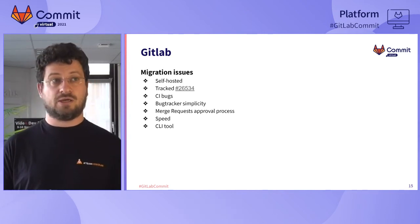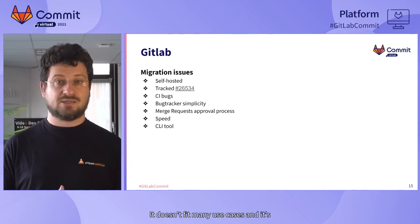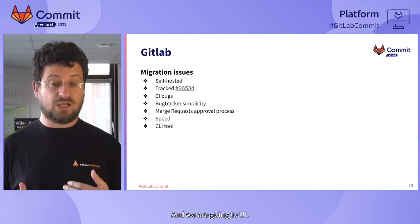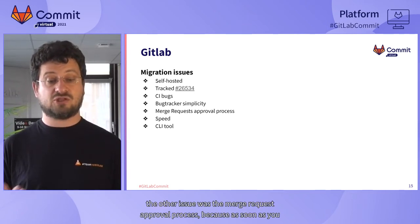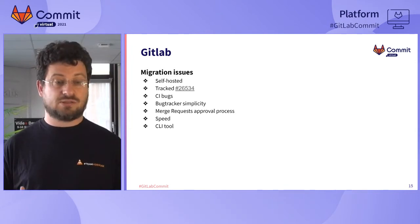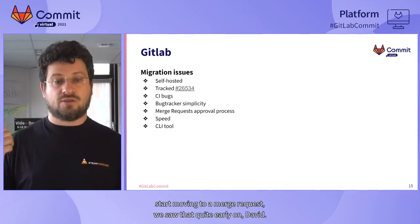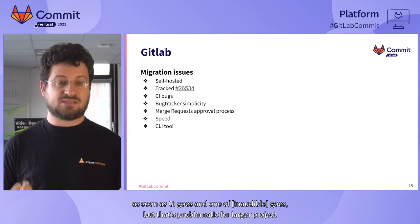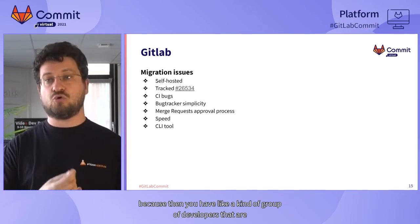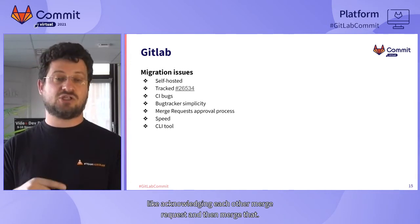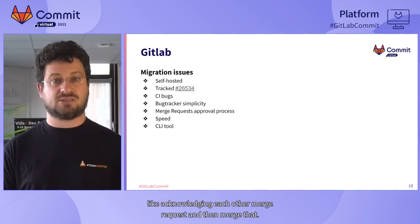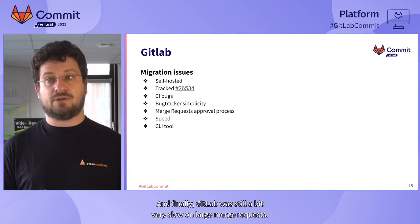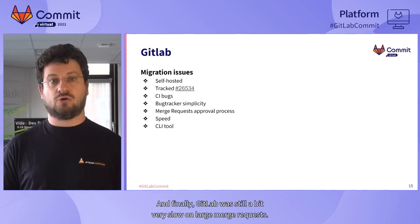The biggest issue was the bug tracker simplicity. It's an issue tracker — it's not really a bug tracker. It doesn't fit many use cases; it's still too simple for most of the use cases we had. And the other issue was the merge request approval process. Because as soon as you start moving to merge requests, you have the tendency to want to merge as soon as CI passes and one reviewer approves. But that's problematic for larger projects — then you have a group of developers just acknowledging each other's merge requests.